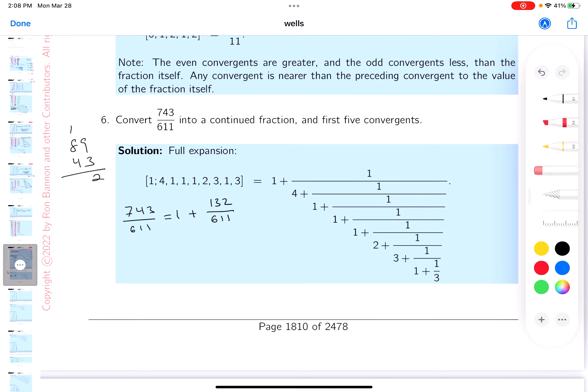Alright, I'll get my eraser out. If you were doing this, this would be what the work would look like. So yeah, I agree with that. What do you get now? This is 611 over 132.